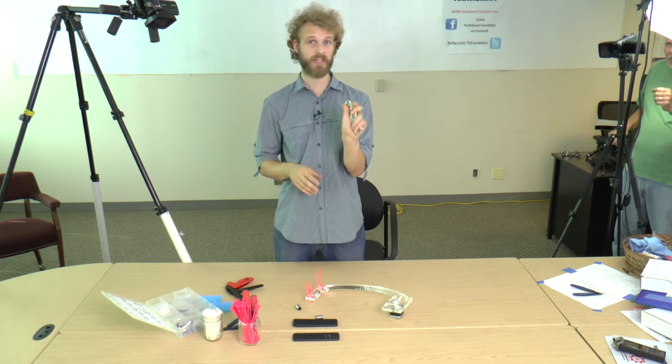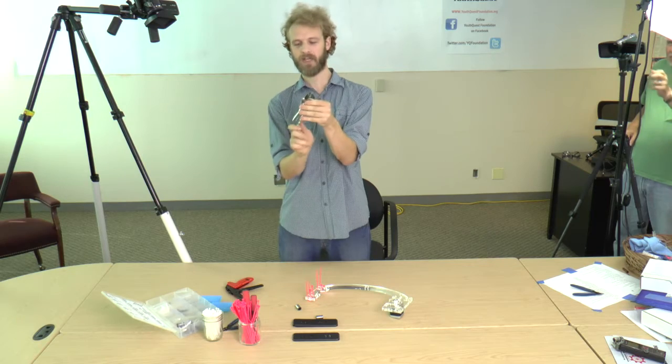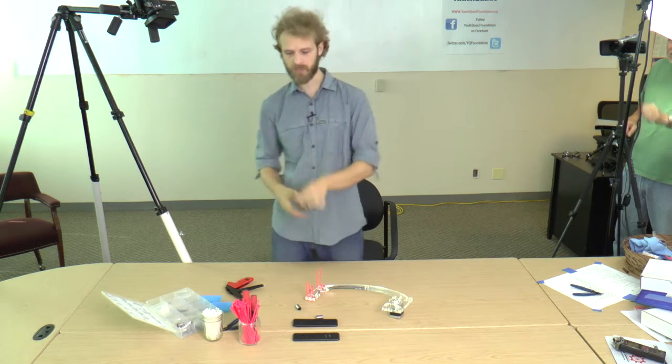Vise grip is a pair of pliers with adjustable tension. And for zip ties, what you want to do is lock it in place, tighten the screw all the way, and that's about the right amount of tension.